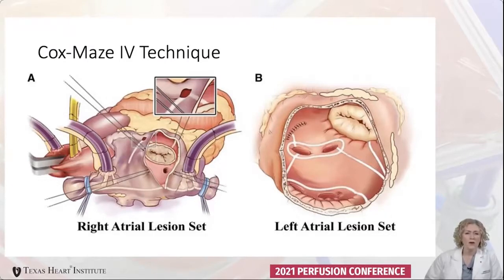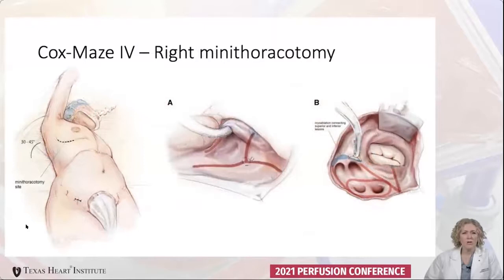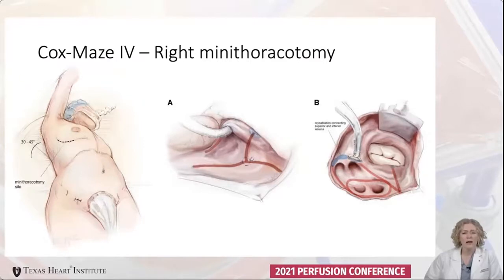Cryoablation is an excellent energy source because it can be used near valves and directly over the coronary sinus, as it preserves the fibrous skeleton of the heart and maintains valve competency without damage. The Cox-Maze 4 lesion set can also be performed very well through a right mini thoracotomy using femoral cannulation for bypass, using both the bipolar radiofrequency clamp and the cryoprobe.